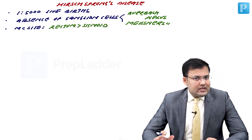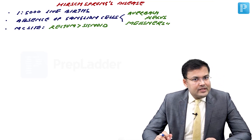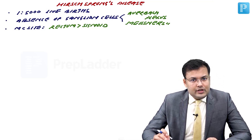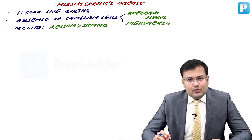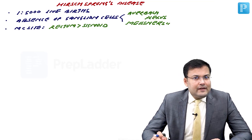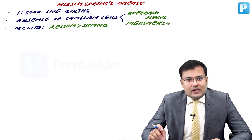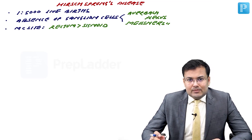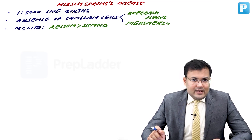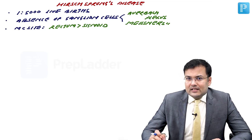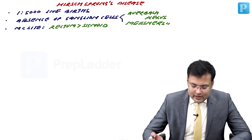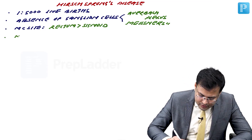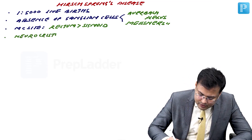Hirschsprung's disease is a type of neurochristopathy. There was a question asked in NEET about this. Neurochristopathy means there is failure of migration of neural crest cells to the colonic mucosa.